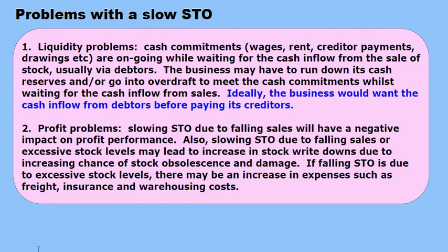Slowing stock turnover due to falling sales will have a negative impact on profit performance. That's obvious because sales is revenue — if there's less revenue, there's less profit. Also, slowing stock turnover due to falling sales or excessive stock levels may lead to an increase in stock write-downs, due to the increasing chance of stock obsolescence and damage associated with those excessive stock levels.